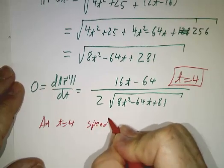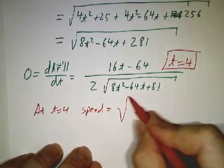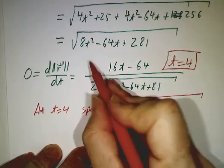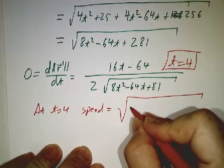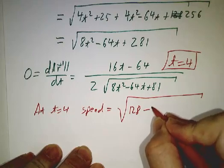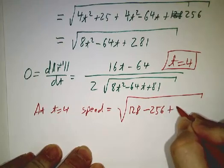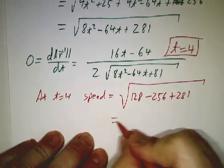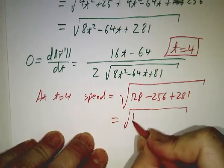the speed is the square root of 8 times t squared is 128 minus 256 plus 281, which is the square root of 153.